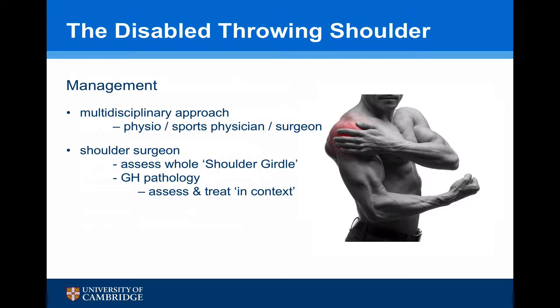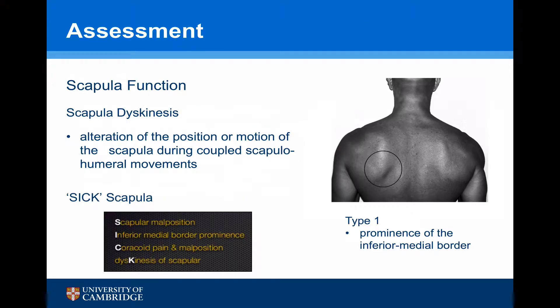The surgeon should probably be the last person to see the patient. The surgeon should assess the whole of the shoulder girdle, and once again take the glenohumeral pathology in context to the rest of the other, more proximal pathologies. It is mandatory as a shoulder surgeon to assess scapular function.